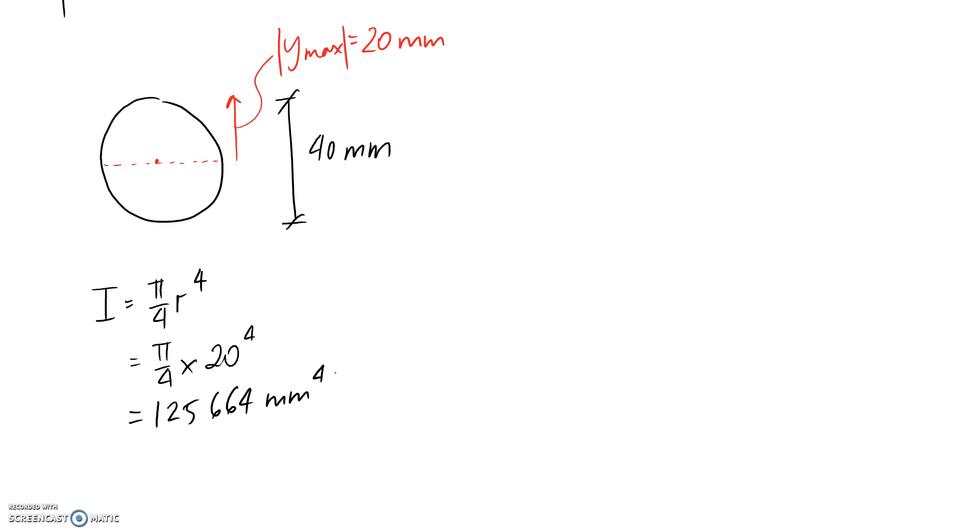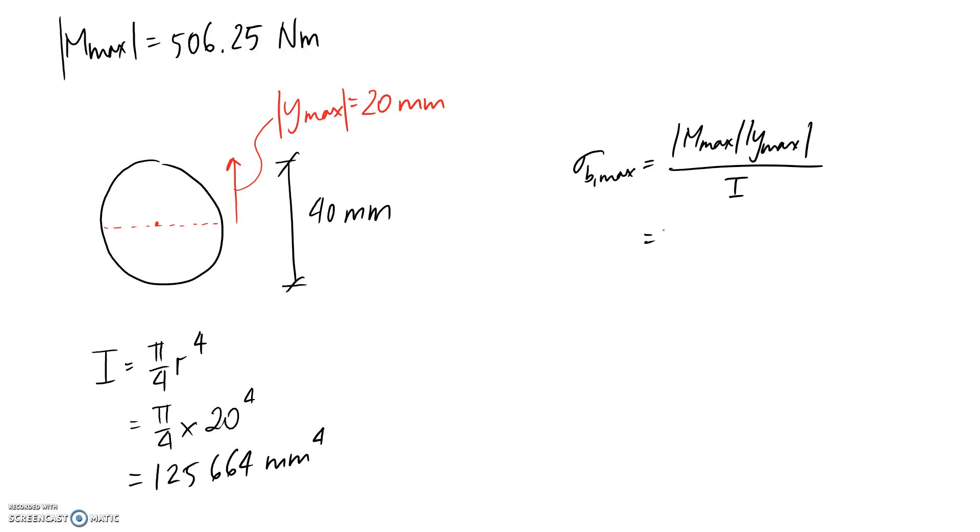So finally, now we have all the pieces to substitute back into our equation for bending stress. So we said that stress at a maximum is Mmax Ymax on I. So the maximum moment that we worked out was 506.25. We need to multiply it by the maximum value that we can get for the distance, which is 20 millimeters. I'm going to convert this to meters, so 10 to the negative 3. And for I, we've got this, it's currently in millimeters to the 4th. So let's convert that as well. So to go from millimeters to meters, it's 10 to the negative 3. And then we need to raise the unit to the 4th, so we need to raise the conversion to the 4th as well.